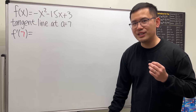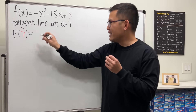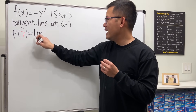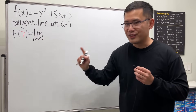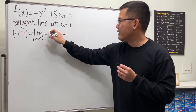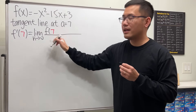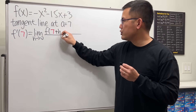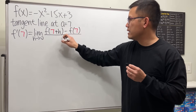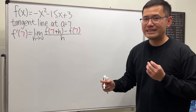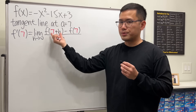The direction says to use the definition of the derivative, which is this one right here. In terms of the limit, we get: limit as h approaches 0 of this version. Here we have f(a) where a is 7, so we get f(7 + h) minus f(7), all divided by h.